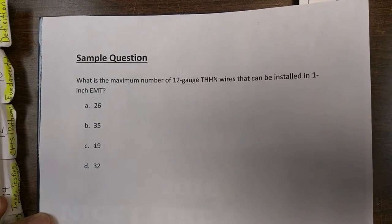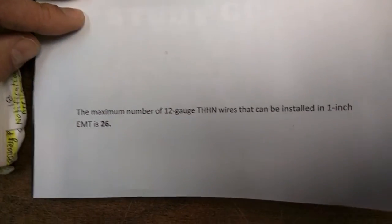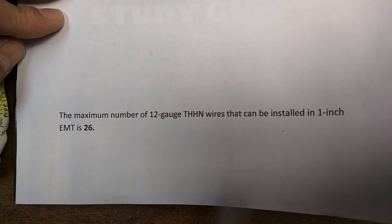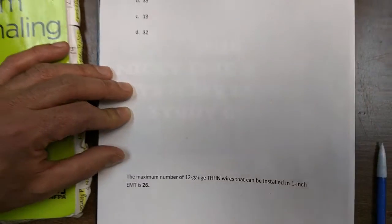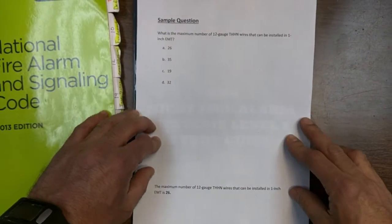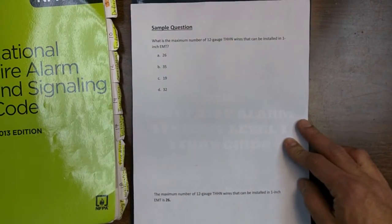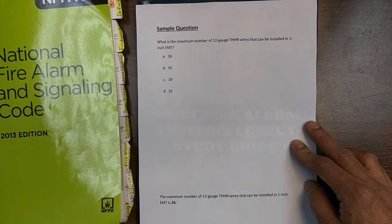So most guides will just give you the answer. In this case, the answer is 26. Now, that's not really going to help you much. Why? Because you don't know how that particular guide or author arrived at that answer.